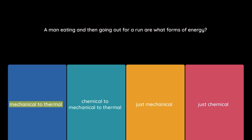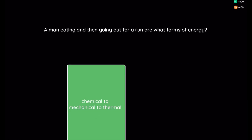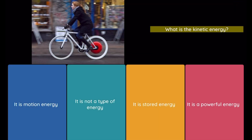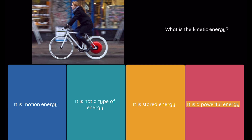Option 1: mechanical to thermal. Option 2: chemical to mechanical to thermal. Option 3: just mechanical. Option 4: just chemical. Question: What is kinetic energy? Option 1: it is motion energy. Option 2: it is not a type of energy. Option 3: it is stored energy. Option 4: it is a powerful energy.